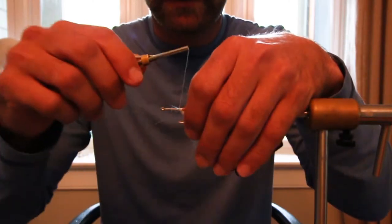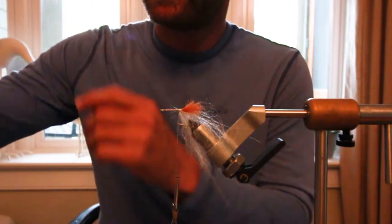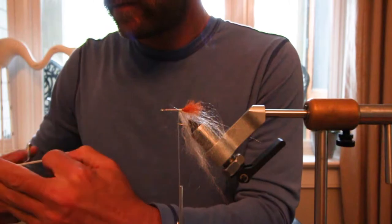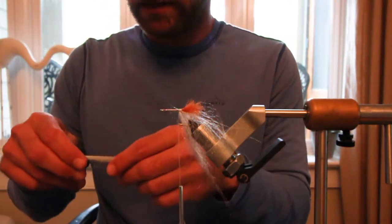And I don't know what kind of vise you're using. Mine is a peak rotary. So I flip it back over and then we'll select a little bit of the tan. That'll be for the top. Kind of taper it a little bit.